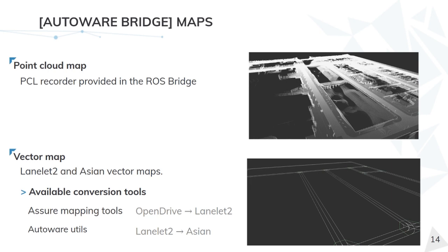Vector maps contain the logical information of the map and are needed to compute routes using Autoware. Currently Autoware accepts two types of vector maps: the Asian vector map and the Lanelet2 vector map. We are currently working towards converting our Carla towns, which are in OpenDrive format, to these formats. Two different available conversion tools are being used to accomplish this.